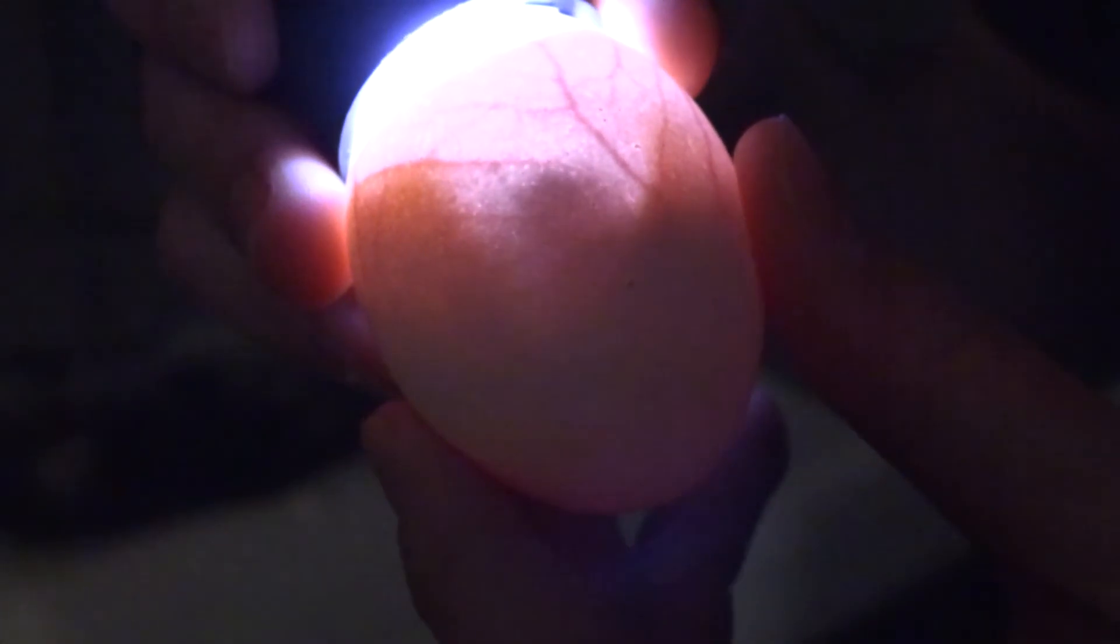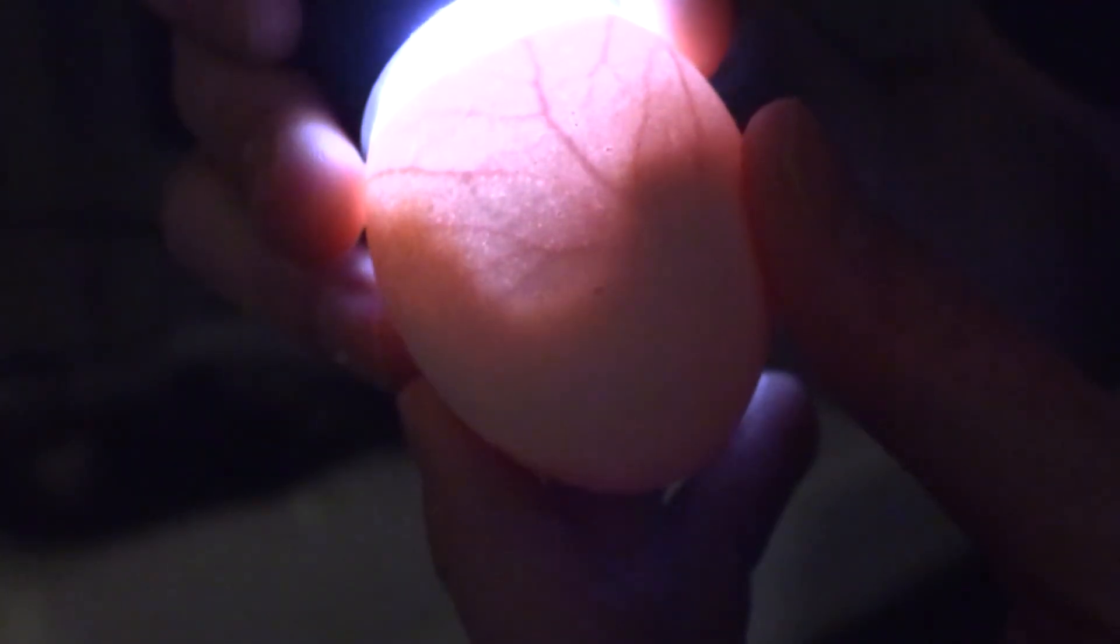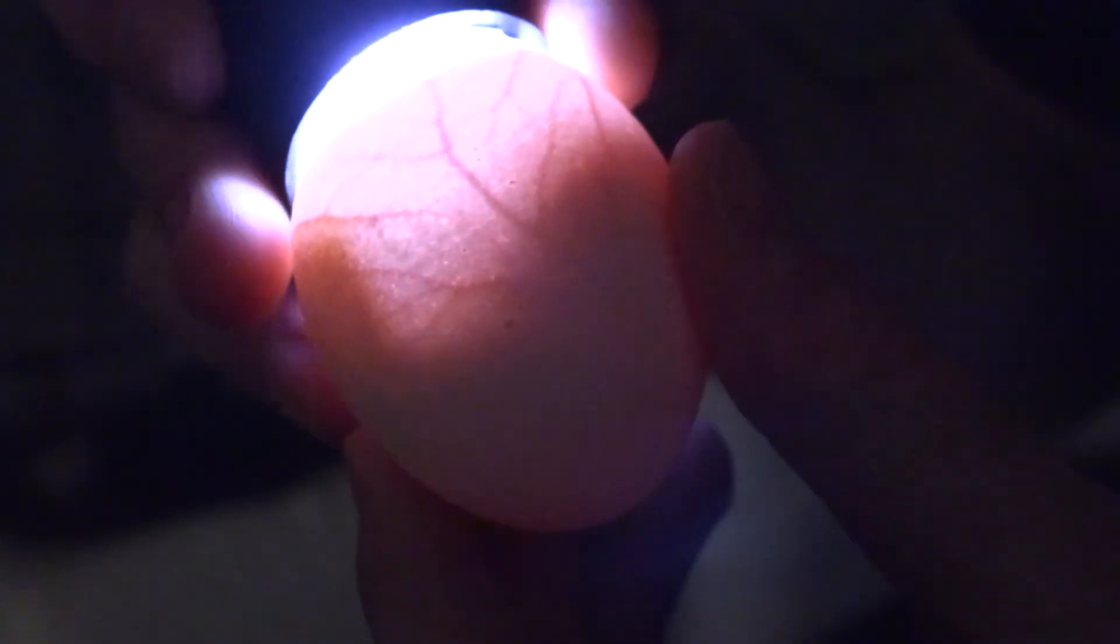All them red lines connecting to the top where the air cell is located you can see them really well. Those are the blood vessels and veins.